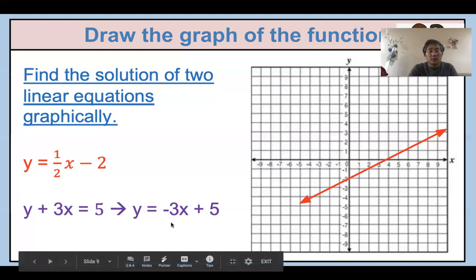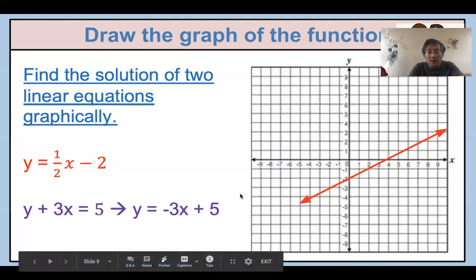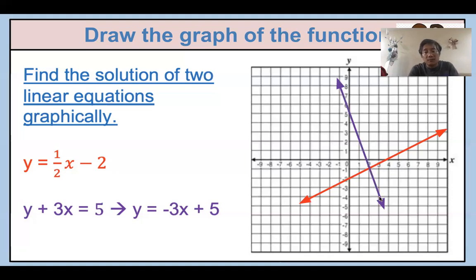For the second equation, move 3x to the other side: y = -3x + 5. Start from the y-intercept at 5. The slope is -3, which is an integer — when x goes 1 unit, y goes down by 3 units. So: 1 unit over, 3 units down. Then again: 1 unit over, 1, 2, 3 units down. You can see an intersection here. Let's draw the graph — 1 unit, then 1, 2, 3 units down. This makes sense.